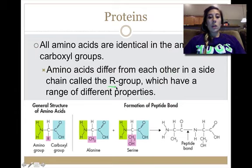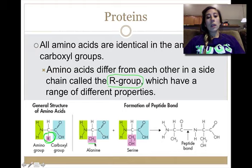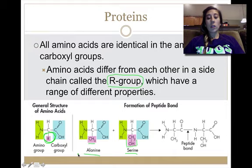The R group, we don't have an element called R, but the R represents the fact that there can be many different types of structures that get attached here. So for alanine, CH3 attaches. For serine, CH2 with a hydroxide attaches. And that's what makes this particular amino acid called serine. That's what makes this one called alanine. Very specific.